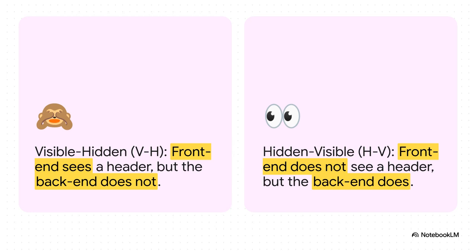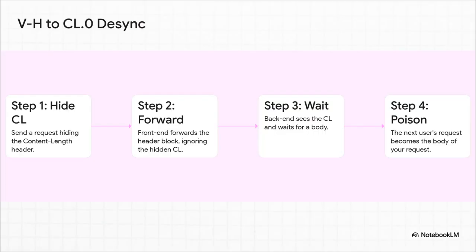So this is our new hunting ground. Forget the old payloads — now we're looking for parser discrepancies. It boils down to two types: visible-hidden, or VH, where the front-end proxy sees a header but the back end doesn't; and hidden-visible, HV, which is just the opposite. Finding one of these is your way in. If you find a way to hide a content length header from the front end — that's a VH flaw — you can trigger a CL0 desync. The front end sees nothing wrong and forwards the request, but the back end sees that hidden content length and patiently waits for a body, which happens to be the very next user's request. And just like that, you've poisoned them.